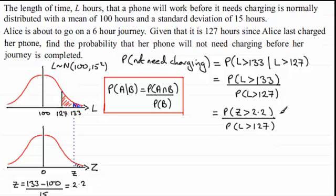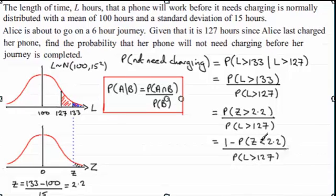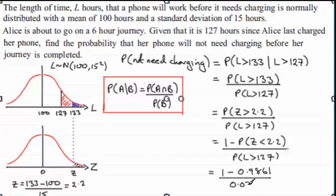So the probability of Z being greater than 2.2 is going to be 1 minus the probability that Z is less than 2.2. 1 being the whole area and we just take away the area to the left of Z, and we're dividing that then by the probability of L being greater than 127. Now if you look up the probability of Z being less than 2.2 in your tables, you should find you get 0.9861. So you've got 1 minus 0.9861, and it's divided by the probability of L is greater than 127, and we found this out in the previous part of this question. Remember it was 0.0359.